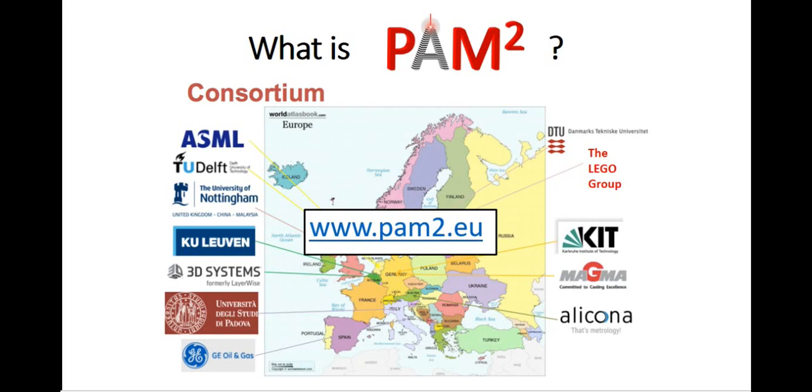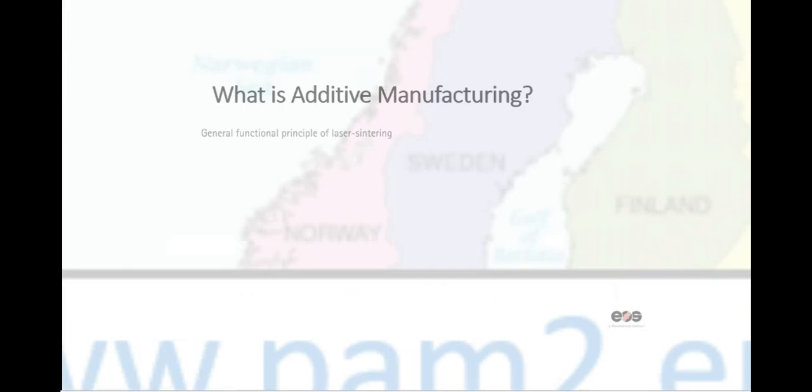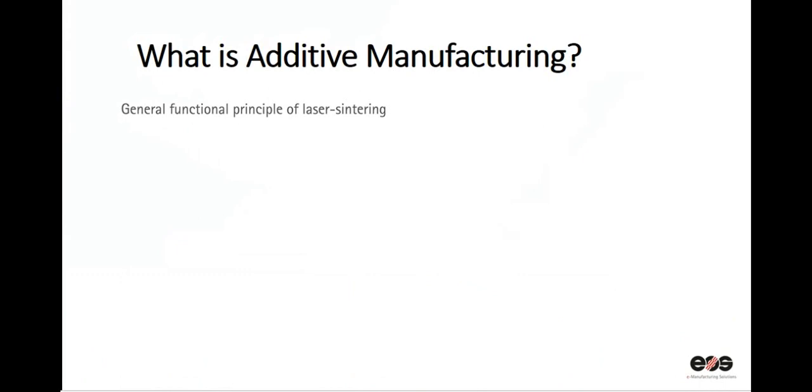If you are not familiar with the additive manufacturing process, don't worry, we'll give you a little introduction. Additive manufacturing, also known as 3D printing, is a process used to create objects by depositing material layer by layer.